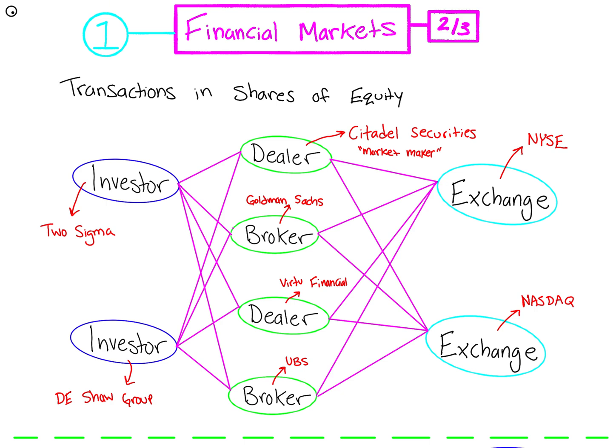Now let's talk about financial markets - a place where transactions in shares of equity are made. I've created a neural network diagram showing the participants involved. On the left are investors - this can be Two Sigma, D.E. Shaw Group, or even individual investors. Then we have dealers and brokers. A dealer, for example Citadel Securities, is also known as a market maker - they trade shares against and with investors by setting the bid and ask price and profiting off the spread. Brokers, like Goldman Sachs, never own the asset - they connect investors together and serve as the middleman.